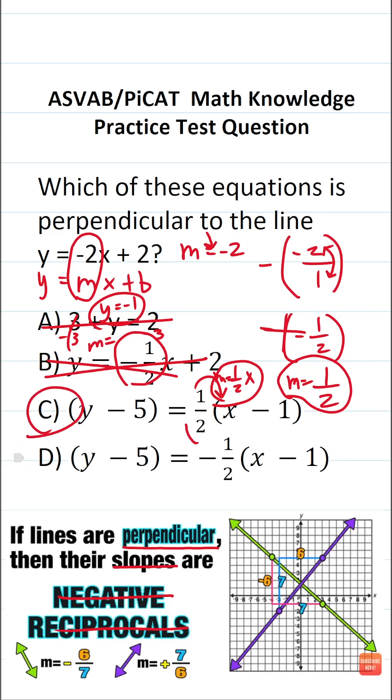So in this case, C is the only correct answer choice. And down here, we can see that m would be negative 1 half. All right. So again, this one is C.